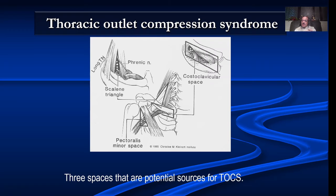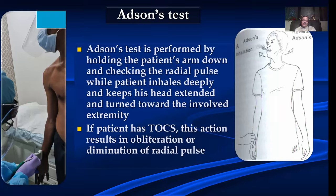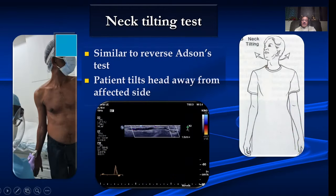There are some other tests for thoracic outlet compression. One is Adson's test — we ask the patient to stand, droop down the ipsilateral hand, tilt on the same side, and take a deep breath in. If the patient has a thoracic outlet problem, the radial pulse becomes weak clinically, or we can keep the ultrasound probe and look for alteration in the waveform. There is also a neck rotation test — we ask the patient to look on the opposite side of the examination, and if there is no thoracic outlet syndrome, there is no significant alteration in the waveform.